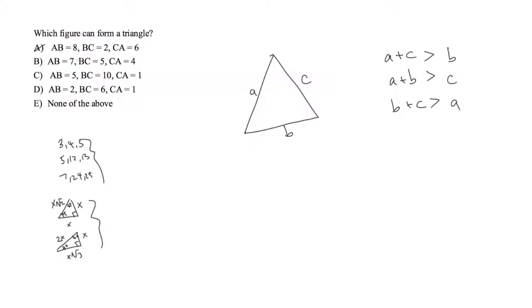If we look at answer choice b we have 7 plus 5 is greater than 12. We have 5 plus 4 is greater than 7. We have 4 plus 7 is greater than 5. So that kind of looks like it will check out.